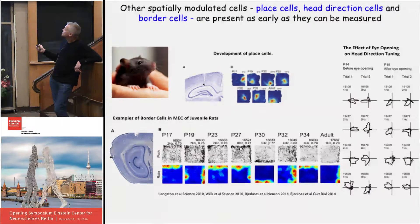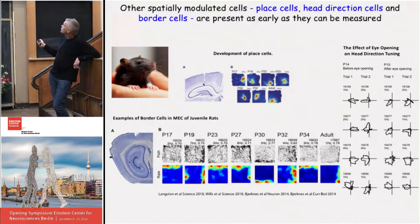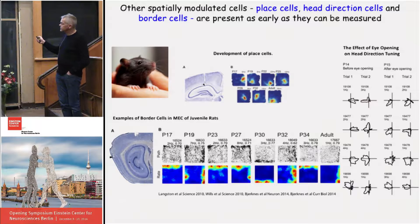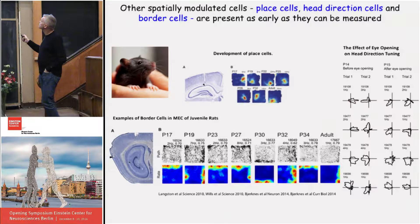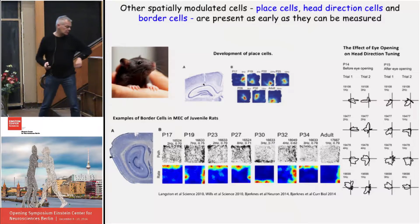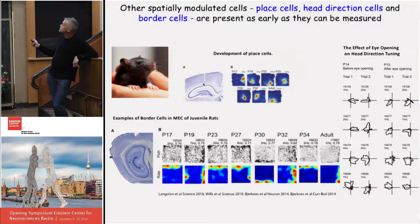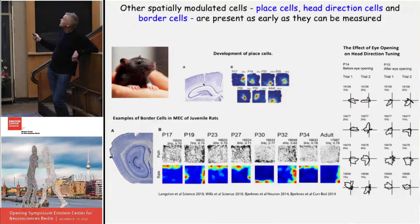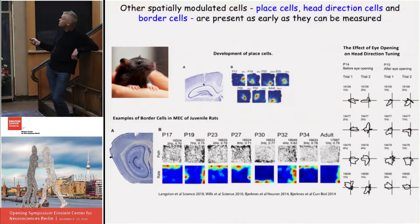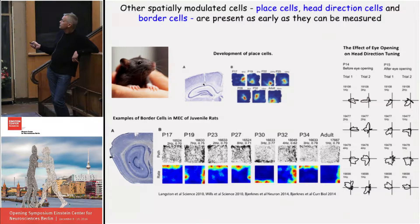Let's begin with place cells from CA1 of the hippocampus, recorded from rats walking in square boxes, where color indicates firing rate, recorded at different stages of development: P17, P19, P22, and so on up to adults. Spatially specific firing fields are present from the beginning — as early as it's possible to get animals to cover a box, just days after they naturally leave the nest. The cells are maybe a little less stable, but otherwise they already have the properties of place cells.